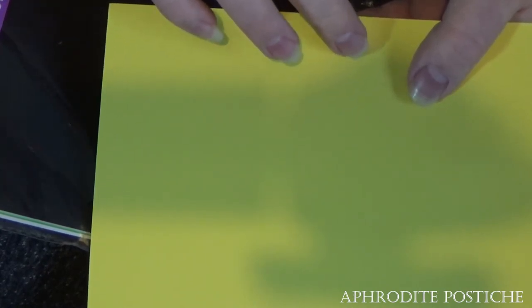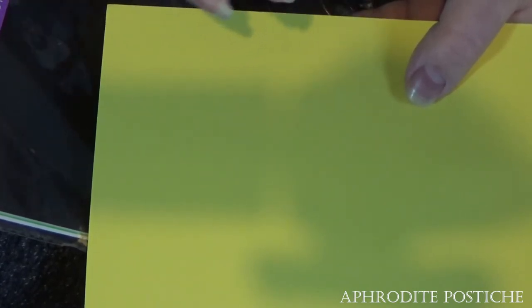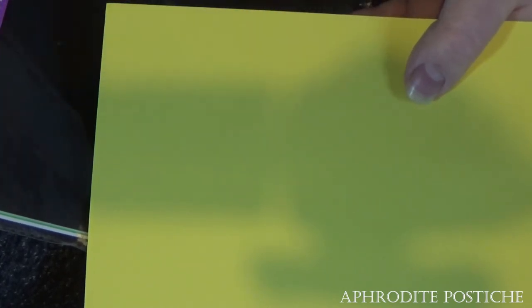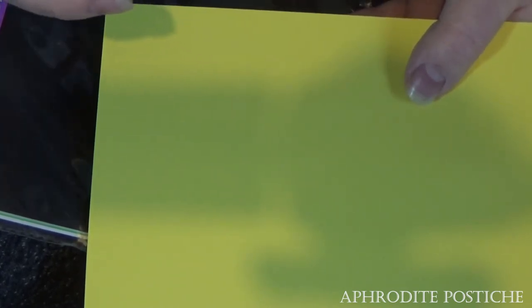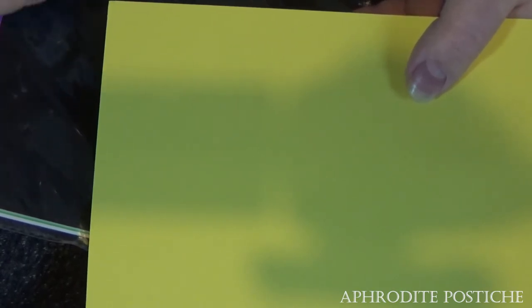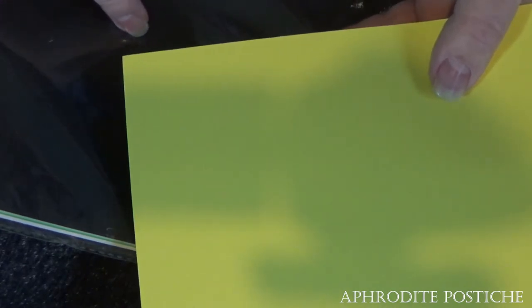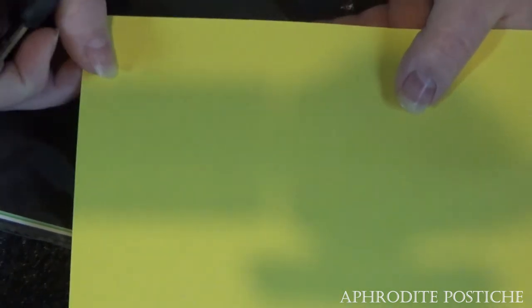I'm just using this so it shows up really nice on camera, but if you want to choose something like a light blue or a light purple, you want something that contrasts the color that you're working with. So for instance, if you're working with really dark hair you want something light under your foundation so you can see to work with the hair. If you're working with really light hair you'd want something really dark like maybe black or some sort of dark blue, something that's really nice and gentle on the eyes.